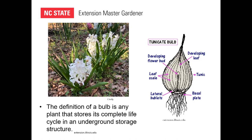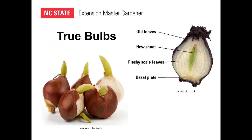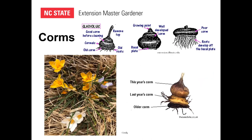Lilies have just the outside scales, which makes buying and planting them a little more difficult because they dry out very quickly without the paper tunic to protect them. I have some sad examples up here — things that have been out of the ground since November and are still viable. True bulbs again: here's a daffodil bulb and a tulip bulb, showing the basal plate where the roots come from, and the old leaves forming the tunic on the outside.